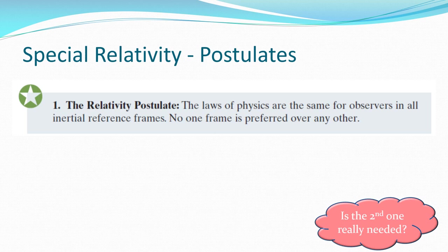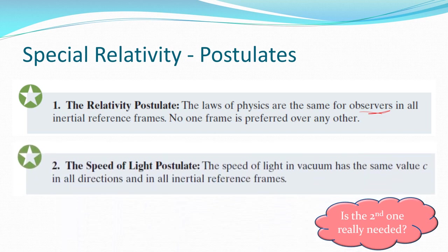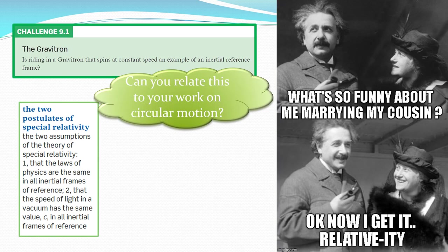Alright, a couple of postulates or the things that we base special relativity on. Number one: the laws of physics are the same for all observers in all reference frames. And number two: the speed of light is constant, it has the value of c everywhere. The question I've asked there is: is the second one really needed? Probably not because we have this one here that says the laws of physics are always the same and we know the speed of light is constant, so therefore it should be constant everywhere. And we'll look at how we get around that when we start moving and how we have paradoxes and how we resolve them.